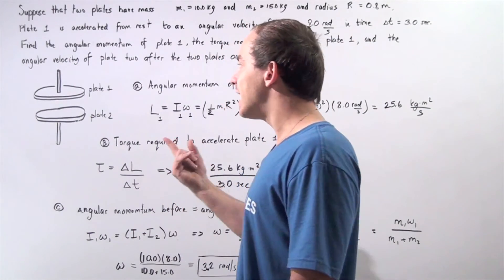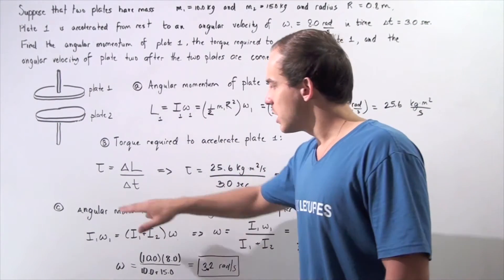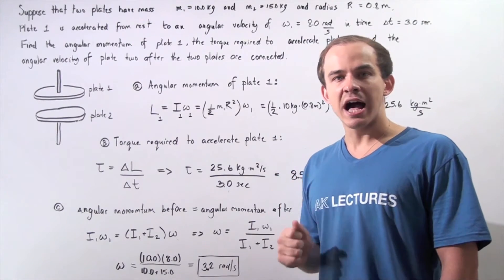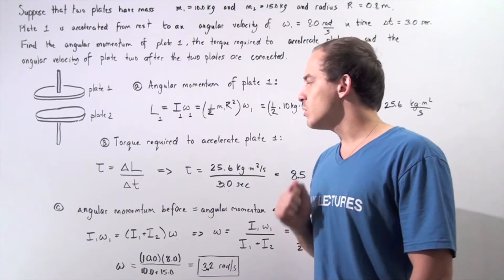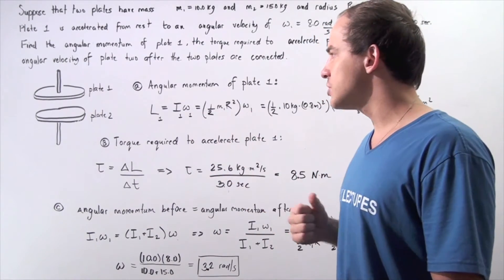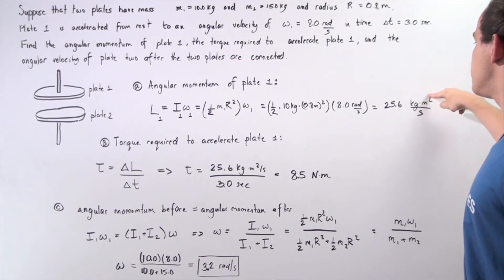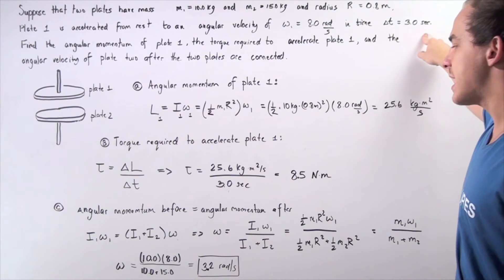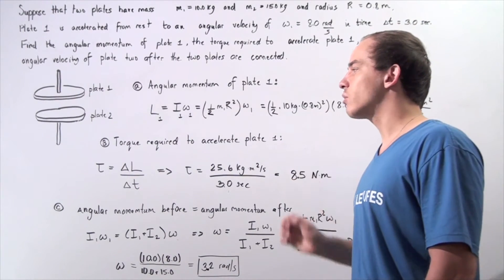Now, what is the net torque acting on plate 1 to accelerate it? Assuming the net torque is constant, the net torque equals the change in angular momentum divided by the change in time. Initially the object was stationary, so the initial L is 0. The final L is 25.6 kg·m²/s. Dividing by the time interval of 3 seconds gives us approximately 8.5 Newton-meters as the net torque acting on the object.